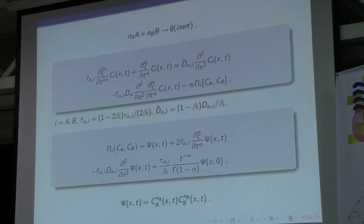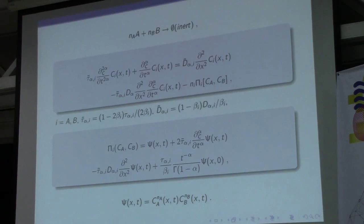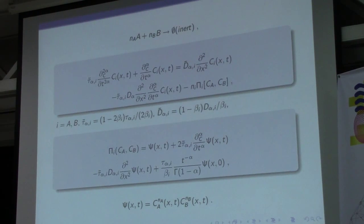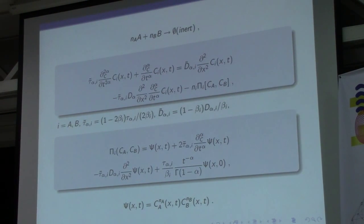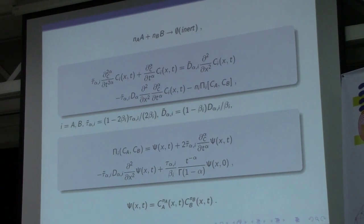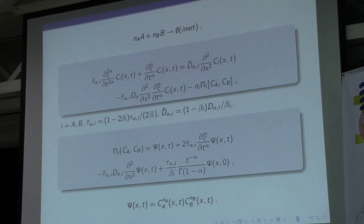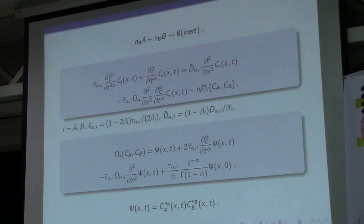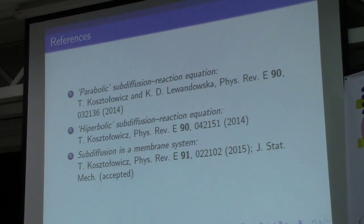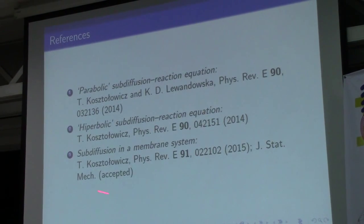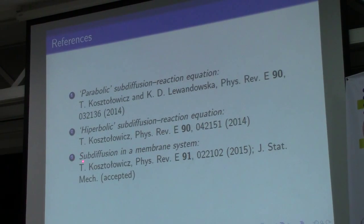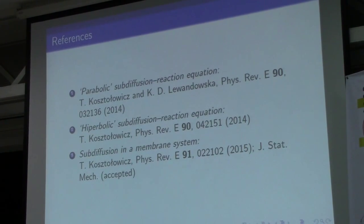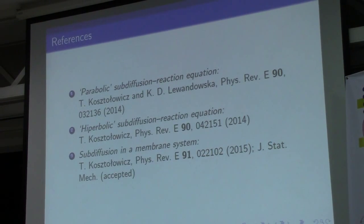The main conclusion of my talk is that the random walk model is a very useful tool for modeling various diffusion processes in various systems. The second conclusion is that the persistent random walk changes the dynamics of sub-diffusion reaction processes. The details of calculations and applications of this model to describe sub-diffusion systems within membranes are presented in the following papers; the next papers are in preparation. Thank you very much.